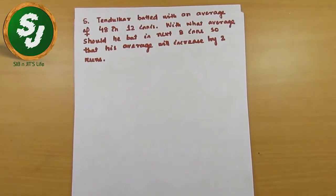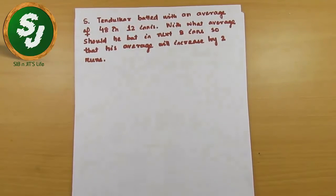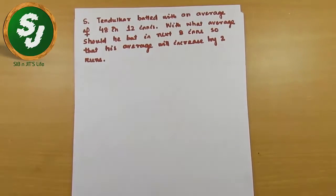Now let's try to solve this question. This is another question from cricket averages. Sachin Tendulkar batted with an average of 48 in 12 innings.